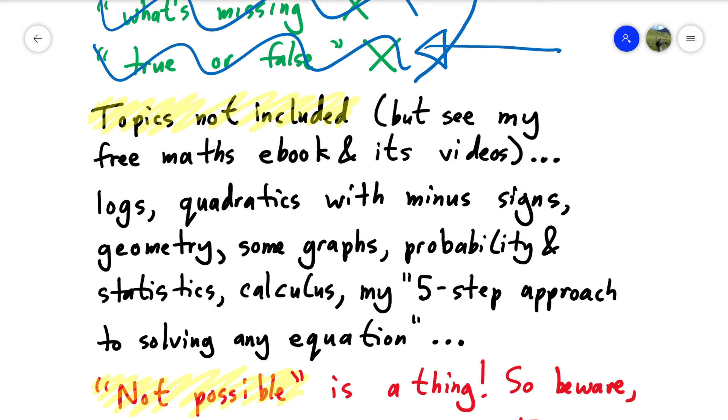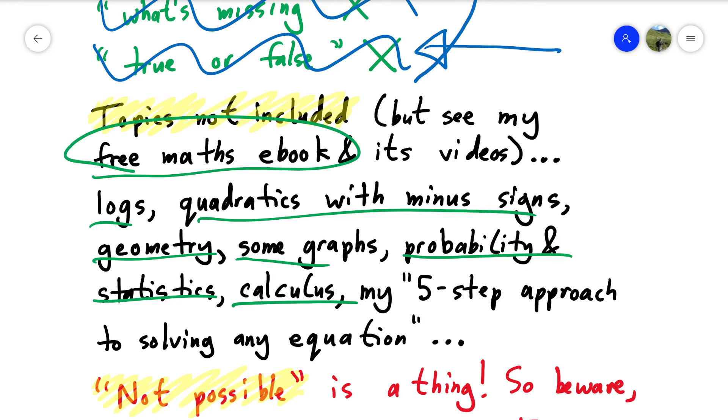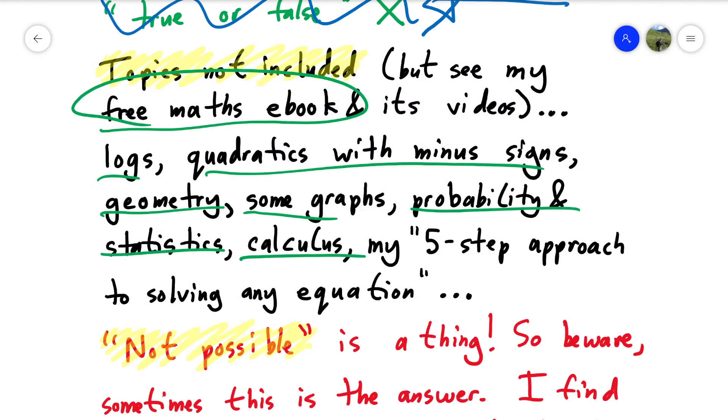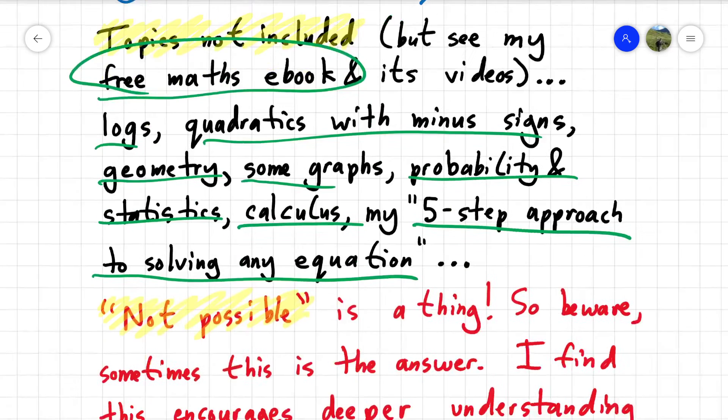Topics not included. What topics are not included? Logs, quadratics with minus signs, geometry, some graphs, probability and statistics, calculus. I'm just going to pause there for a moment. By the way, all of these are included in my free maths book. Oh, he's plugging his maths book. It's free. So, you know, go and check it out if you want. And finally, something which I'm a big fan of is I have what I call a five-step approach to solving any equation. I reluctantly didn't include it in this series of 20 lessons because to me the five-step approach to solving an equation is something that I tend to introduce to my students once I can see they're getting on top of the basics. And this set of 20 lessons is basically a primer in the basics of maths, the foundational skills which can then be built on.